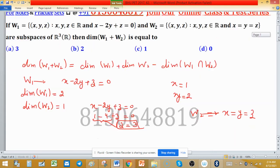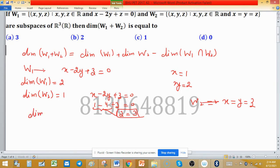Now come to dimension of intersection of W1 with W2. Elements have the property x minus 2y plus z equal to 0 and x equal to y equal to z. If any element is in intersection, it will satisfy the property of W1 as well as W2. Both properties will satisfy.